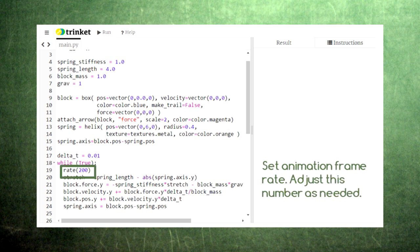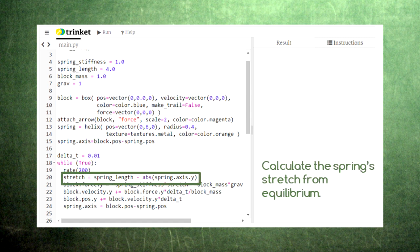First, we set a rate for our animation. If the code runs too quickly or too slowly for you, try changing the rate value. Next, we calculate the distance that the spring has stretched by.